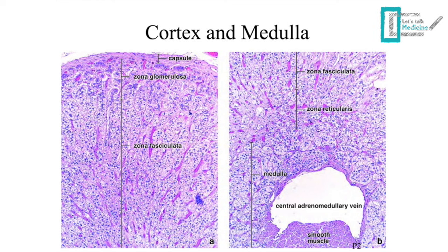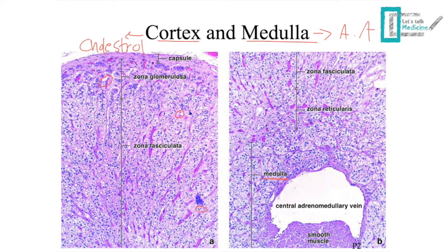Before going through the histological slides, we need to know what precursors the cortex and medulla use to synthesize their hormones, because these precursors are reflected in the histological slides and can help differentiate between the different layers. The cortex uses cholesterol and the medulla uses amino acids. In the different layers of the cortex you can see many whitish droplets — this is the cellular storage of cholesterol — which is not seen as much in the medulla, because it doesn't need to store cholesterol the way the cortex does.